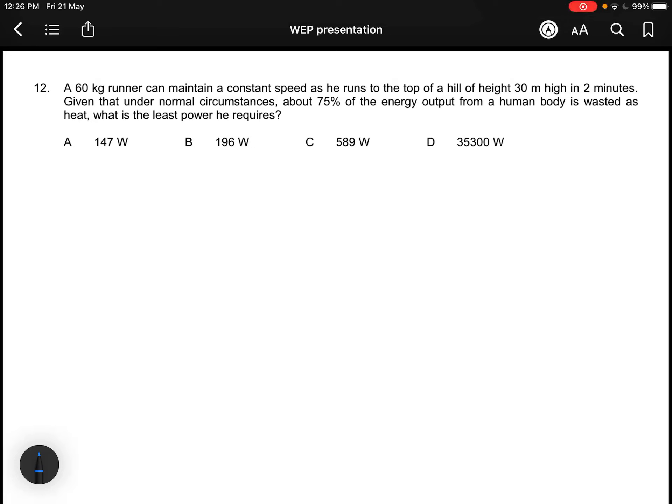Question 12: this problem is similar to questions 8 and 9. You have a person producing a certain amount of power. 25% is useful, and this useful amount is the mgh divided by the time. 75% is not useful. The question asks for the total.